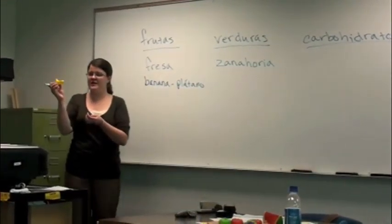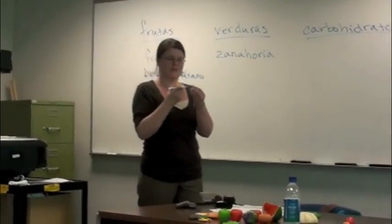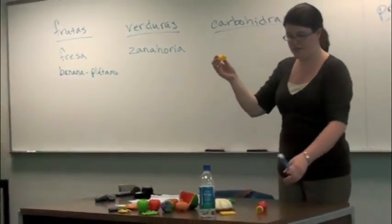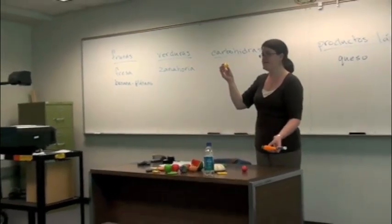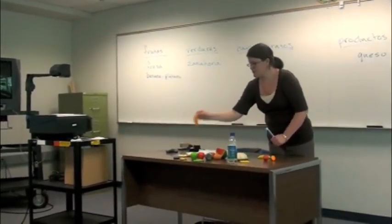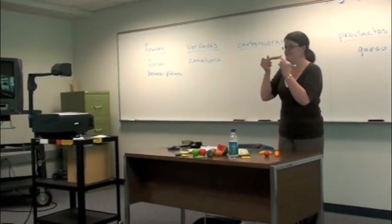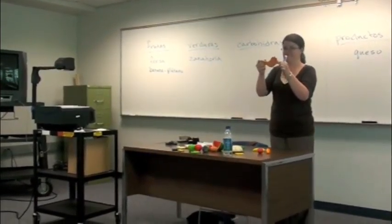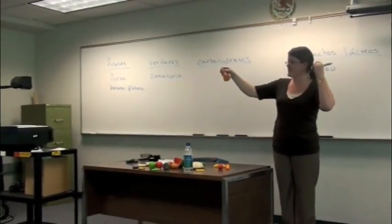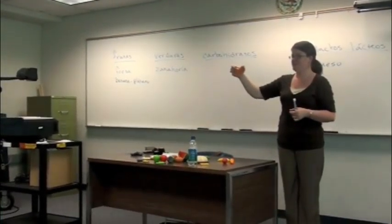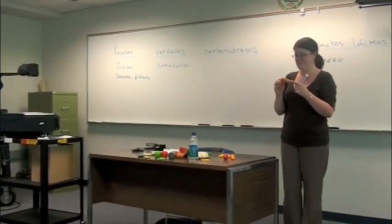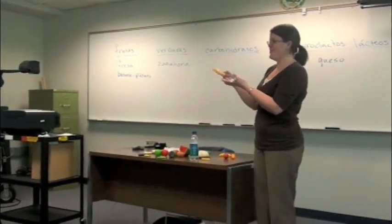¿Y el plátano es tan anaranjado como la zanahoria? No. La banana es amarilla — el plátano es amarillo. Y aquí tenemos... ¿Cistelo? Es la chuleta de cerdo. No, no es una chuleta de cerdo. Es pollo.